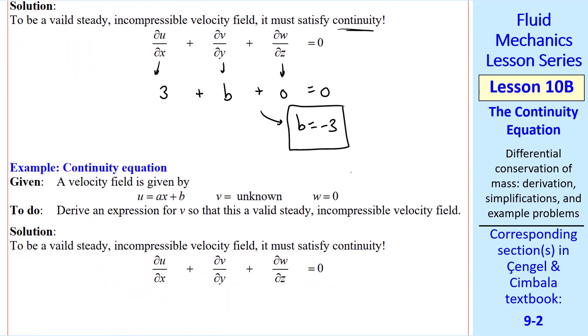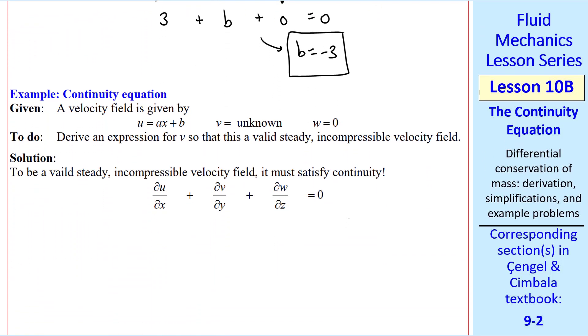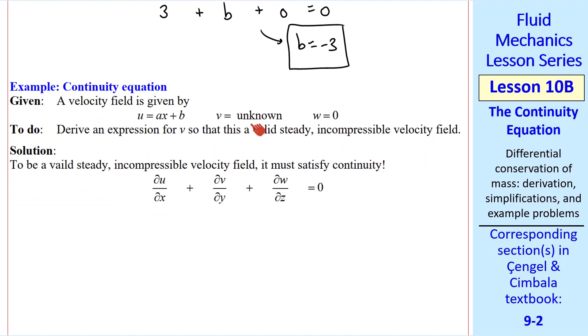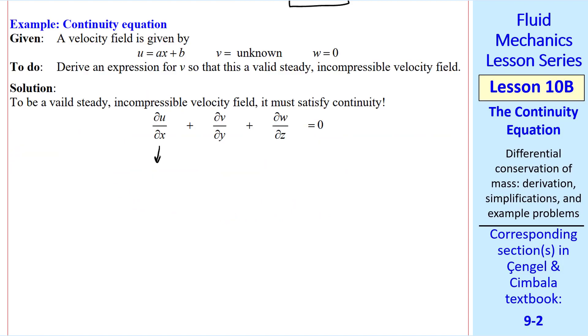In the next example, we'll extend this where we have u and w, but v is completely unknown. We have to derive an expression for v, so that this is a valid, steady, incompressible velocity field. To solve this, we note again that we must satisfy the continuity equation.